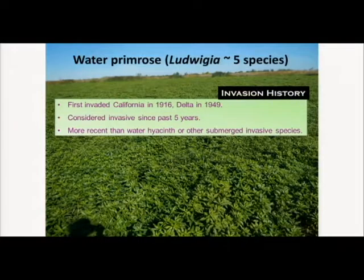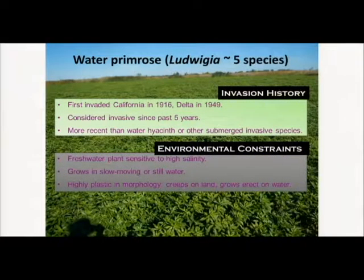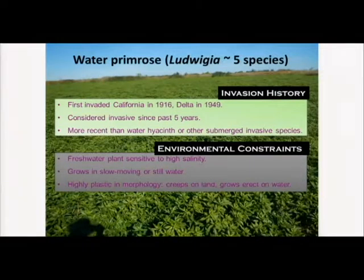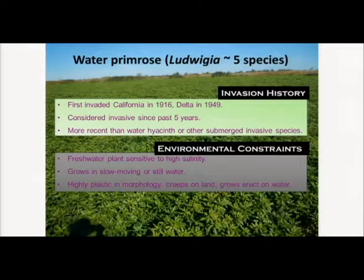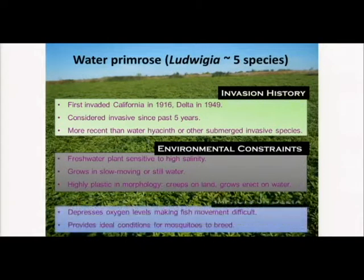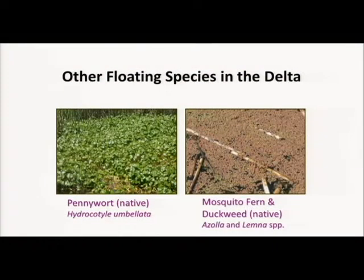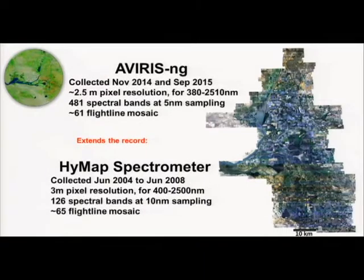Those are the main species we have to map. They all share the same thing—something happened at the end of the 1980s that caused them to become invasive; I'll go into that later. There are a couple of other floating species as well. The total range of biodiversity is pretty high, but they are all spectrally quite different from each other.